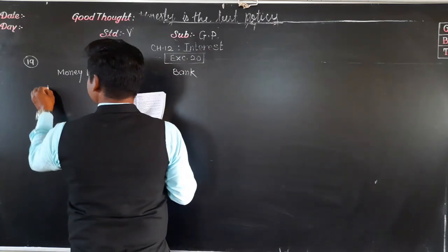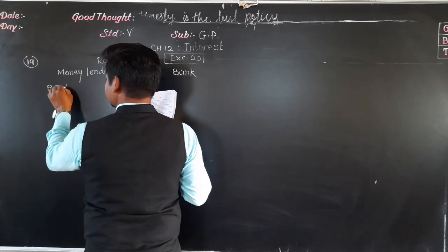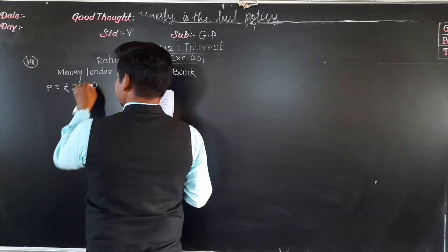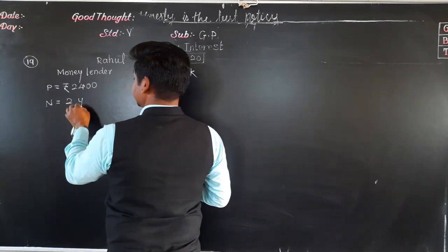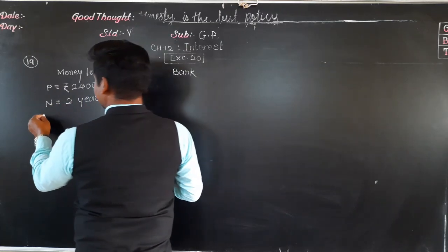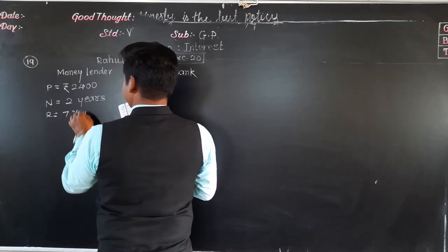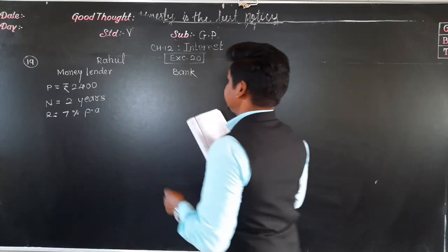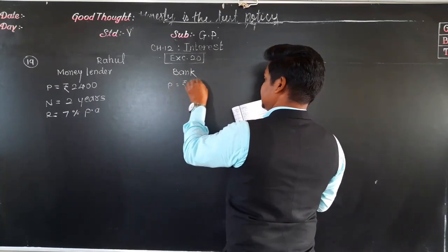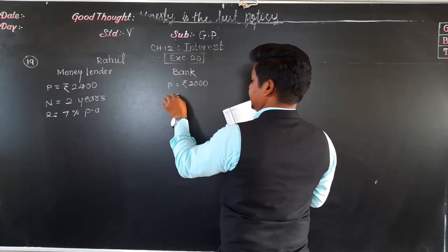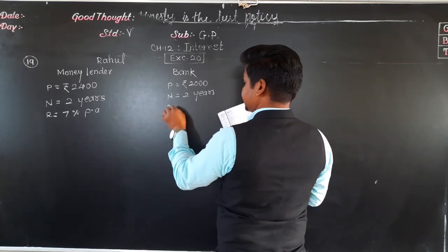We will make two parts: loan taken from the money lender, and loan taken from the bank. From the money lender, the principal is rupees 2400, the period is 2 years, and the rate of interest is 7% per annum. From the bank, the principal is rupees 2000 for two years at 12% per annum.